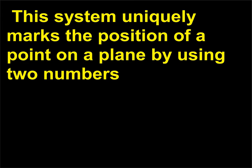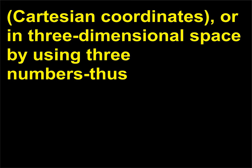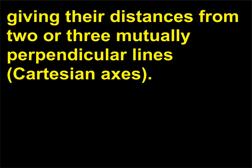This system uniquely marks the position of a point on a plane by using two numbers, or in three-dimensional space by using three numbers, giving their distances from two or three mutually perpendicular lines, Cartesian axes.